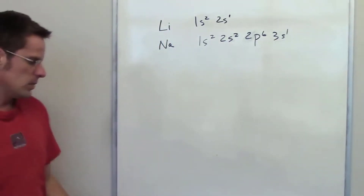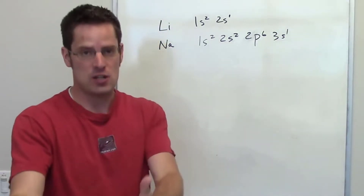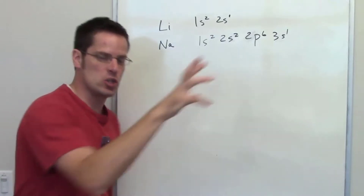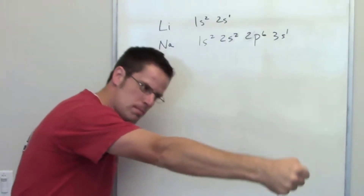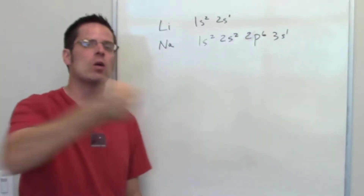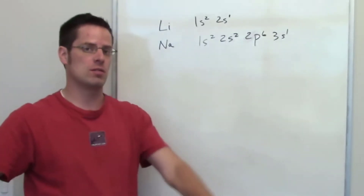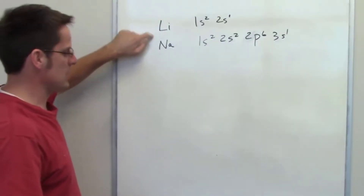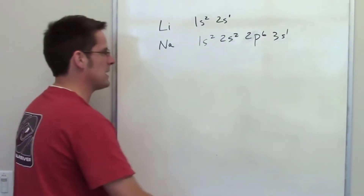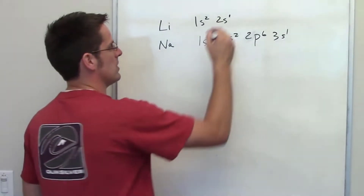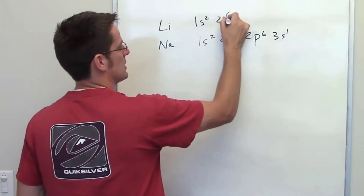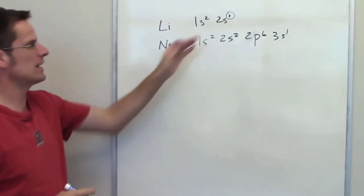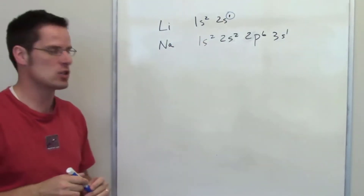When we talk about first ionization energies, that is the amount of energy required to remove or tear away an electron from an atom. In the case of lithium, the electron being torn away in its first ionization is in a 2s orbital.